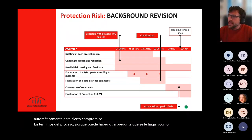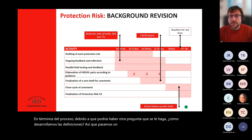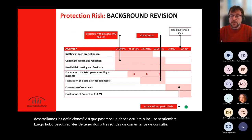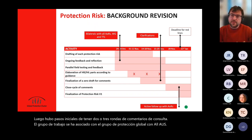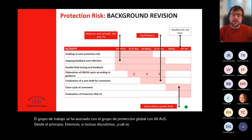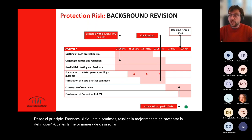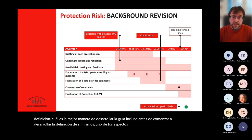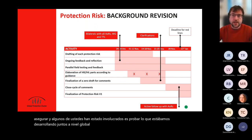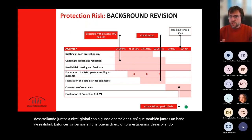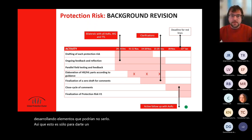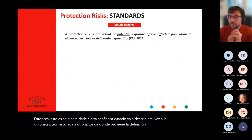Regarding how we developed the definitions: since October — even September — there was an initial step of having two to three rounds of consultation and feedback with working groups and testing with the Global Protection Cluster and all AORs since the very onset. We even discussed the best way of presenting the definition and developing the guidance before starting to develop the definitions themselves. One of the core aspects we tried to ensure was to test whatever we were developing at global level with some operations, to give a reality check on whether we were going in a good direction or developing elements that might not be applicable.